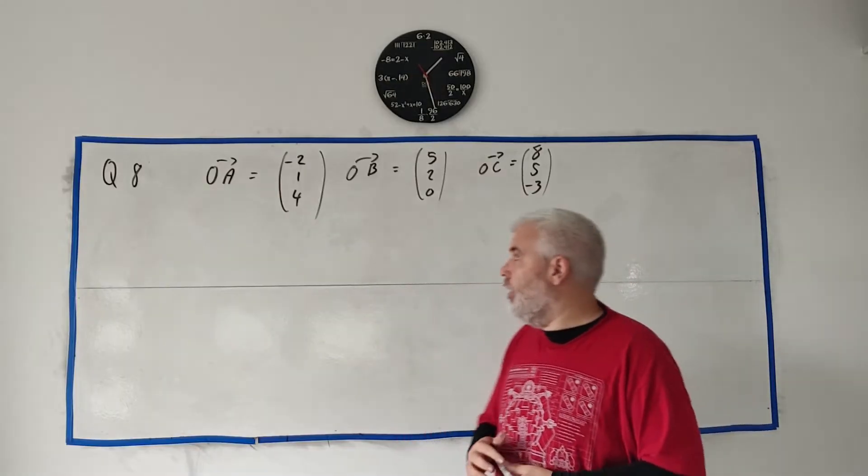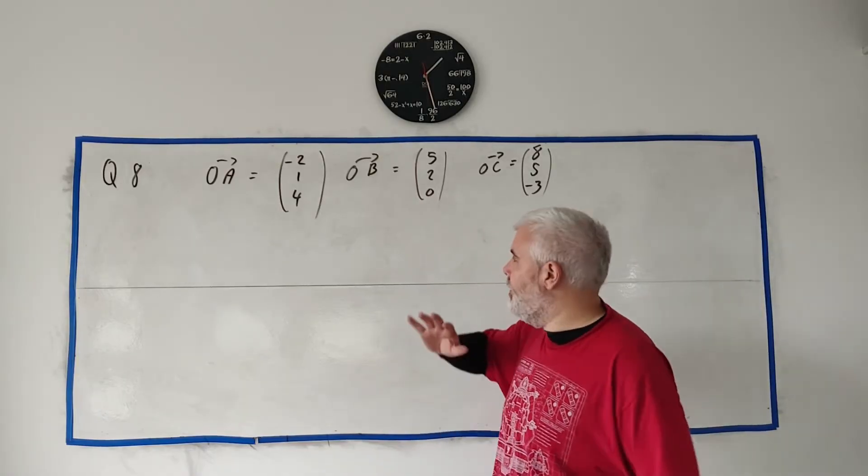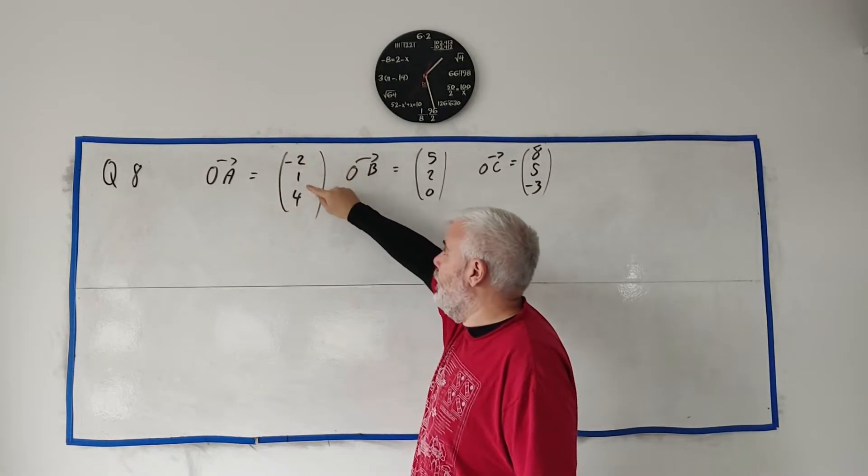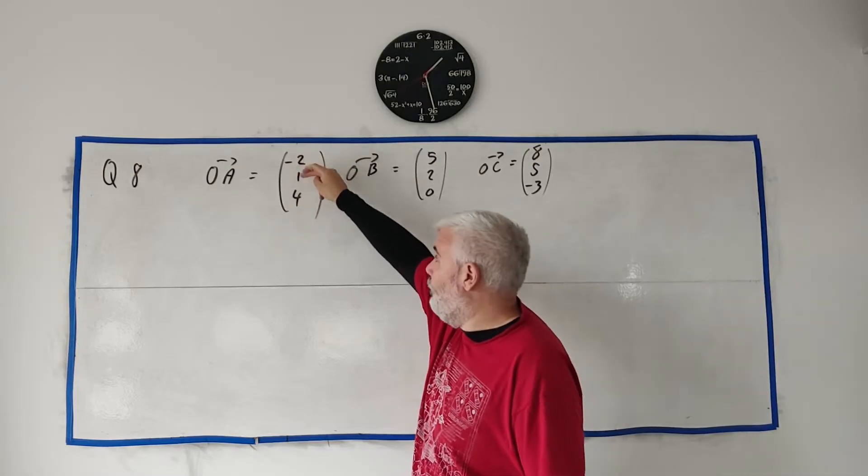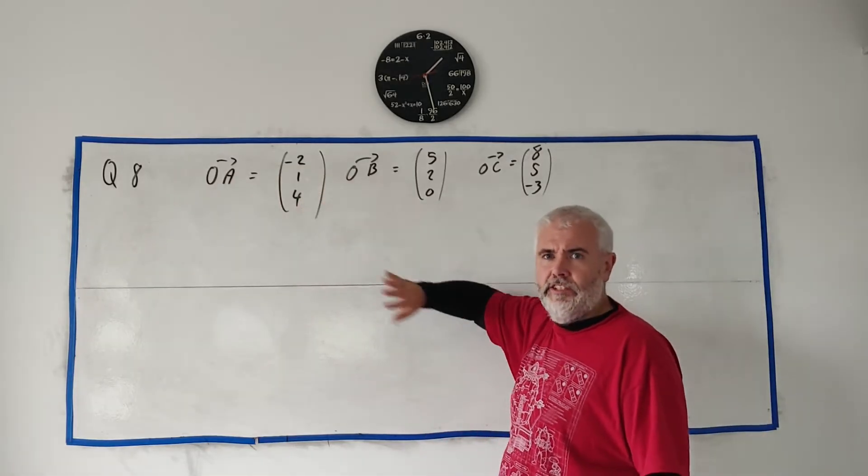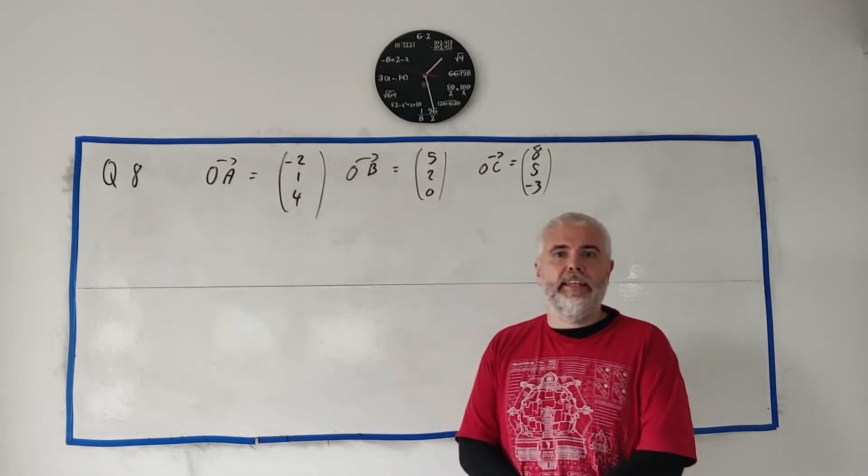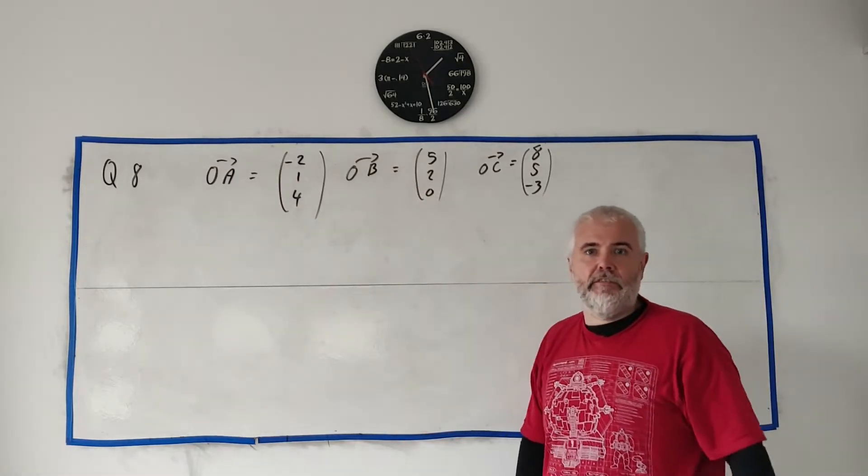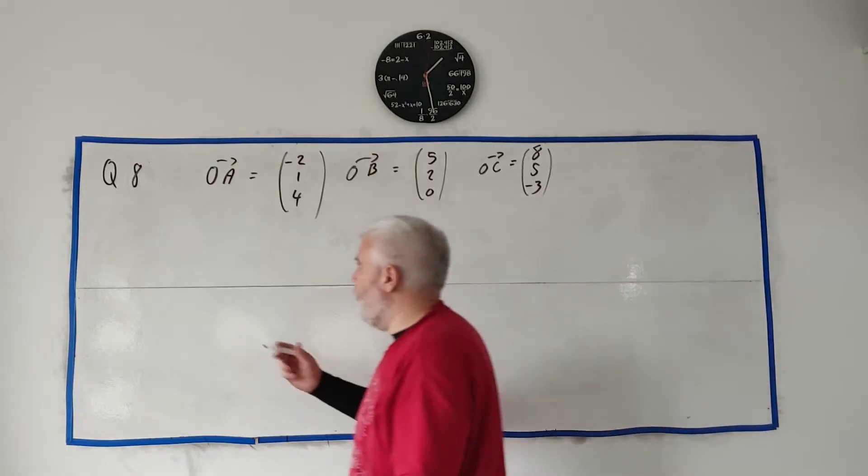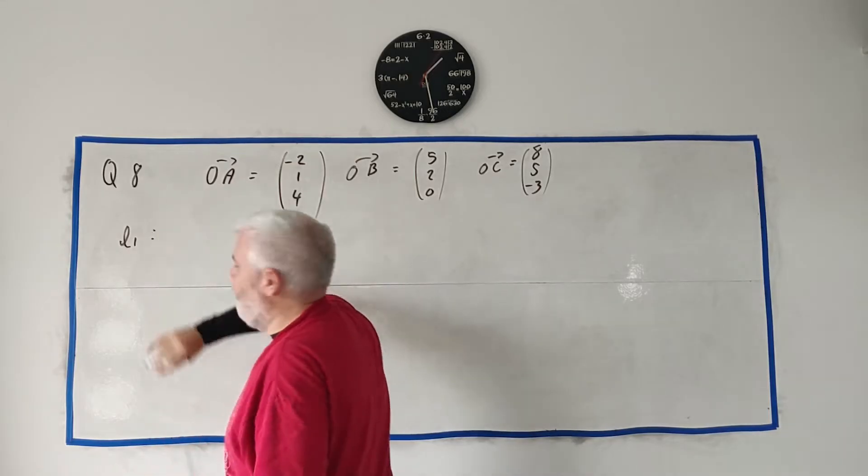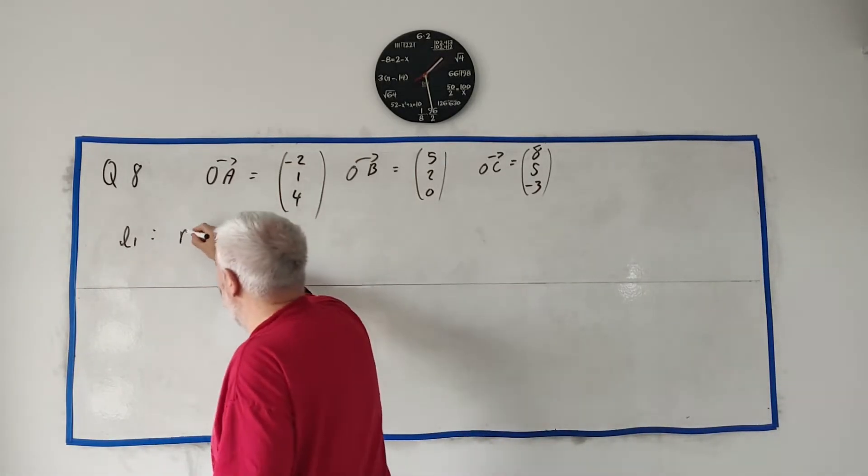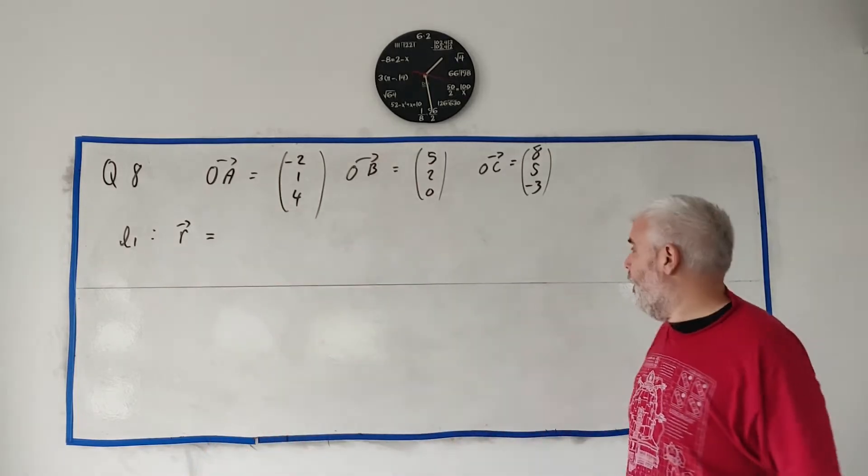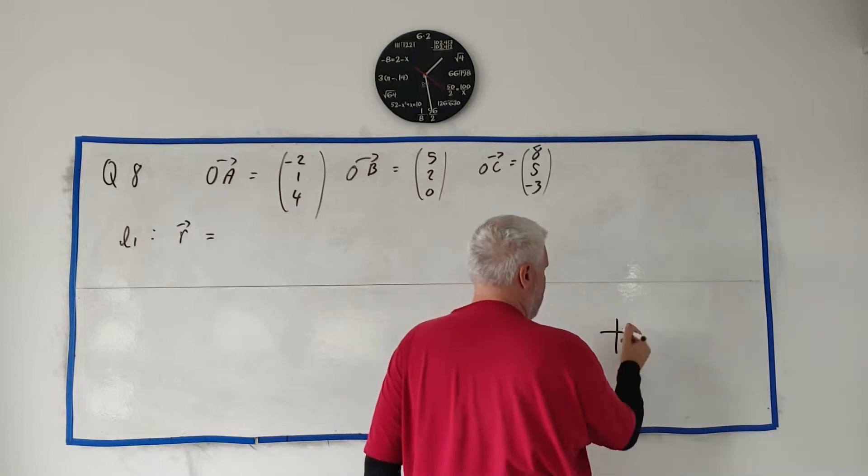In question 8, we have a vector question. First thing I want to point out is I've wrote this in column form. So they gave us minus 2i plus j plus 4k. I'm just writing all the i's as minus 2 on top, j's in the middle and k's on the bottom. It's just a little easier to write.